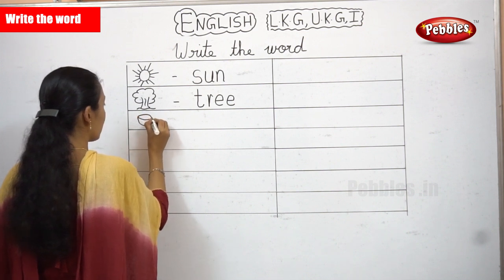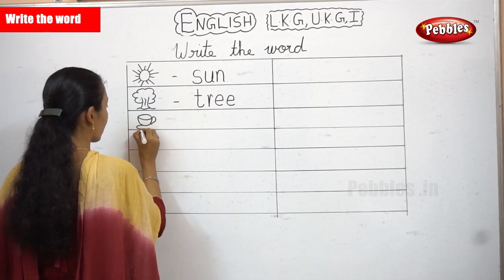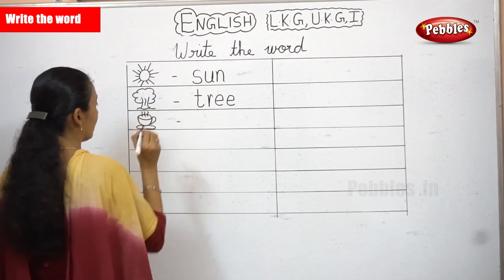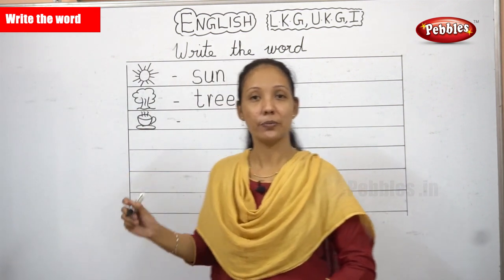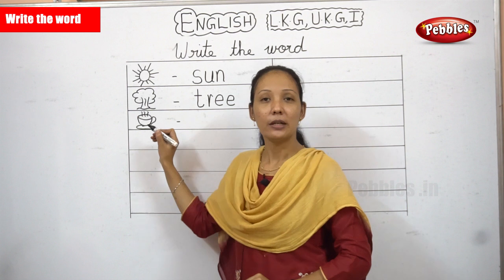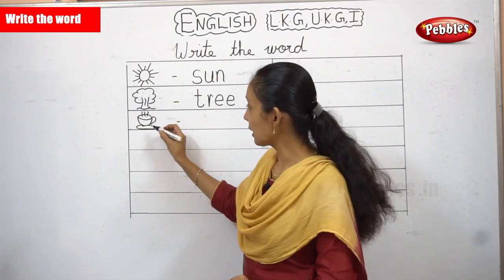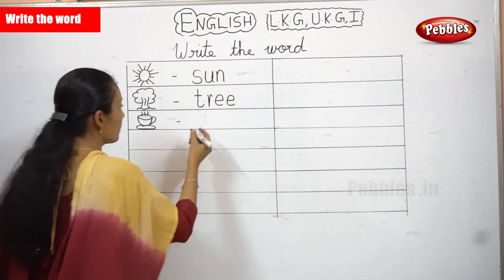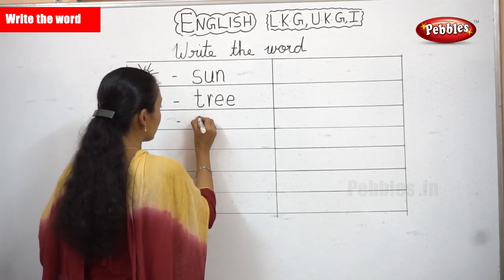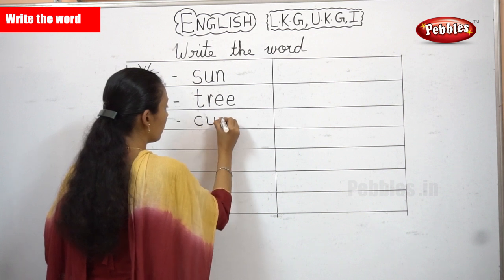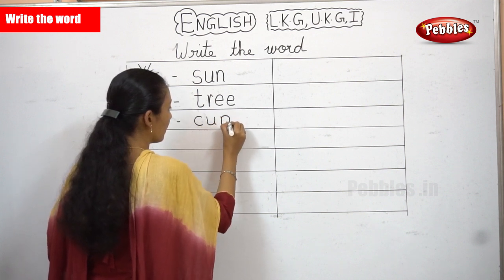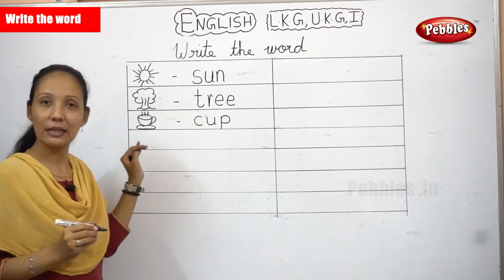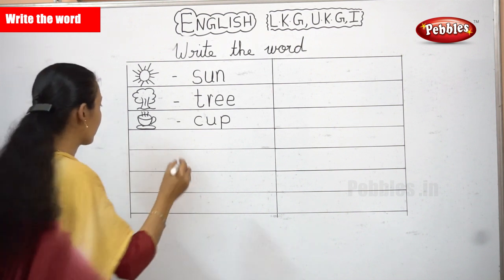What picture is this? It's a cup. Shall we write the spelling for a cup? If you watch carefully, you can learn even to draw these pictures. What is the spelling for cup? C-U-P. Cup. You drew a sun, a tree and a cup. Shall we go to the next one?